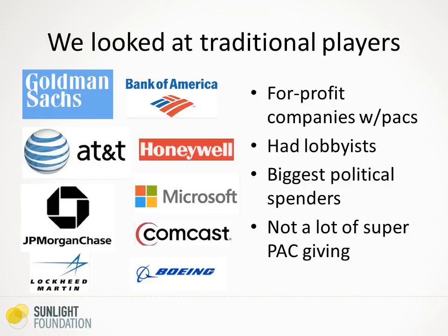We looked at the traditional players first — organizations that were big Washington players with political action committees. We limited ourselves to for-profit companies, though we will be looking at unions and trade associations later. We did 200 corporations, largely because there's so much disparity in terms of different types of industries and companies. All the companies we look at had political action committees for all six years, had lobbyists for all six years, and we took a look at the biggest political spenders. In this group, there was not a whole lot of super PAC giving — the biggest was Chevron giving $250,000 to the Congressional Leadership Fund.